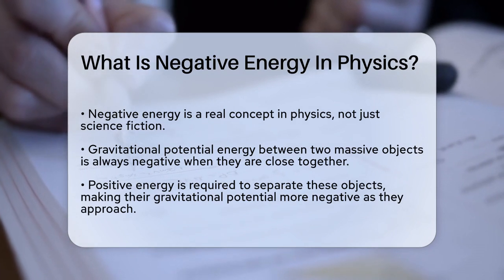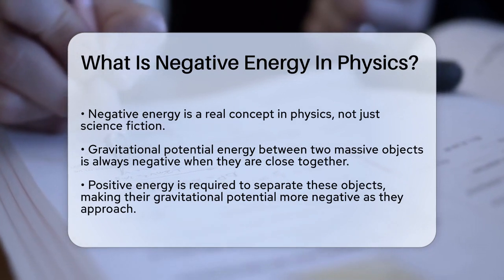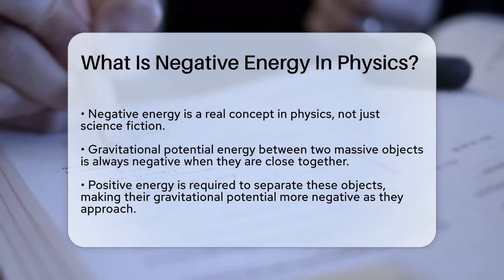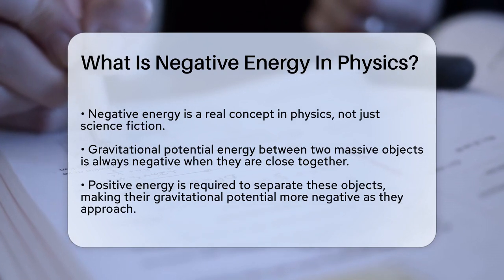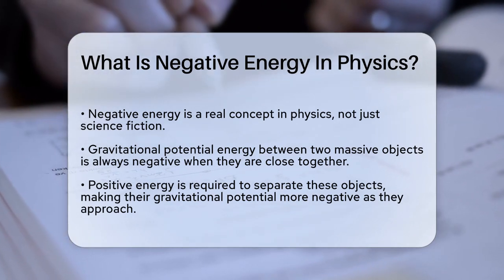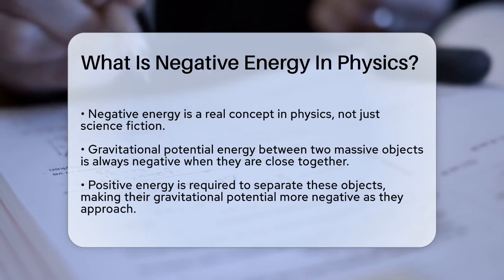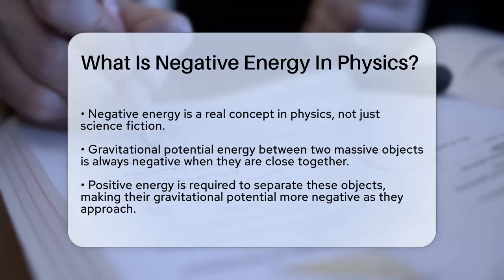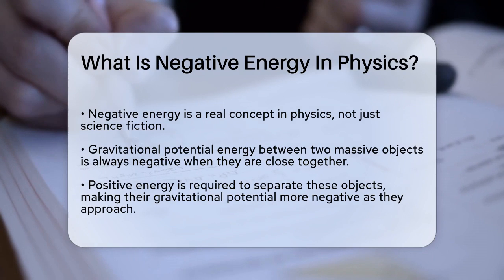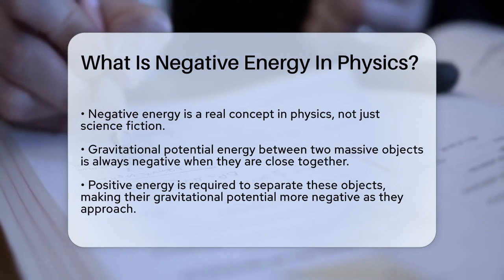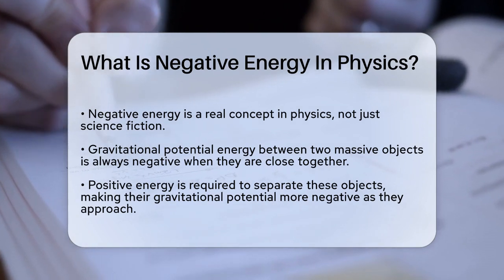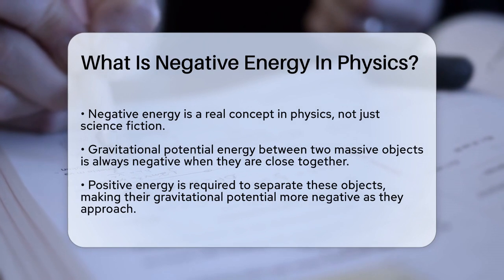To start, let's look at gravitational energy. When two massive objects are close to each other, they have a gravitational potential energy that is always negative. This is because it takes positive energy to pull them apart. As they move closer, their gravitational potential energy becomes more negative, and as they move apart, it approaches zero.